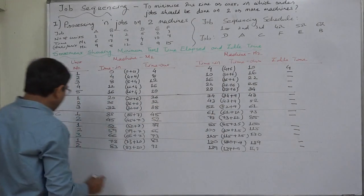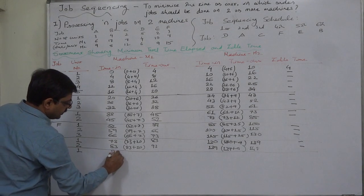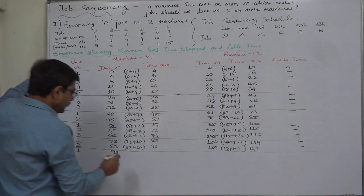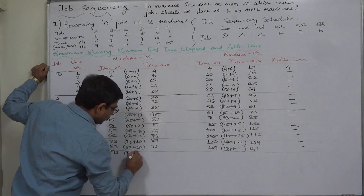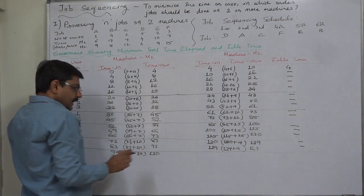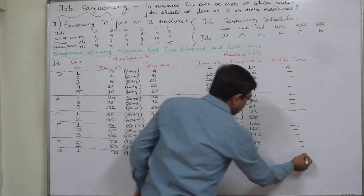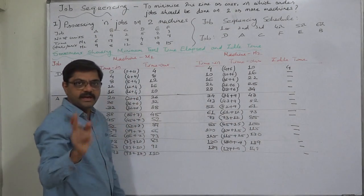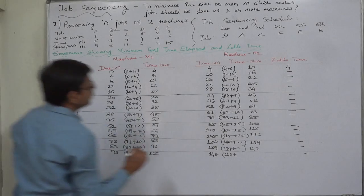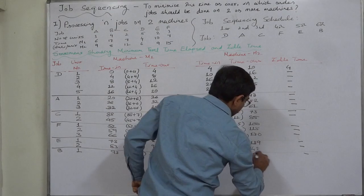Now the last job is B. B has 4 units. First unit: time in is 93, 93 plus processing time of 17 equals 110. Machine 2 is busy, so the unit is waiting — no idle time. 110 or 148, whichever is later: 148 becomes time in, 148 plus 8 equals 156 for time out.